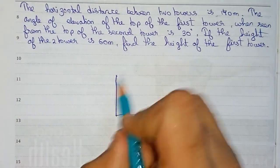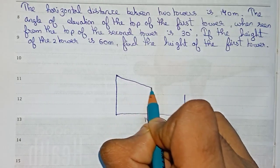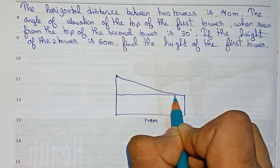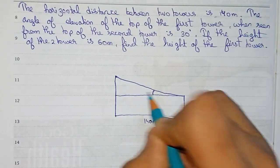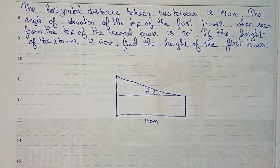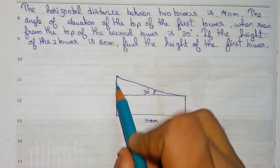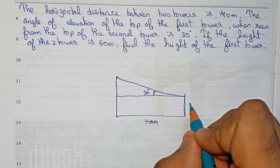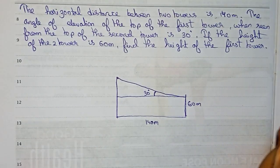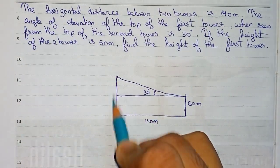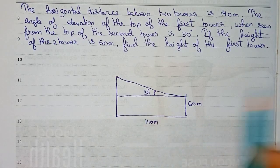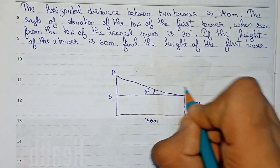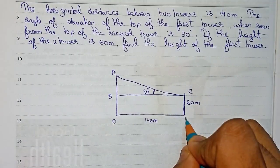From the top of this tower, the angle of elevation will be 30 degrees. The second tower height is given as 60 meters, and we need to find the height of the first tower. We name the points A, B, C, D, and E.